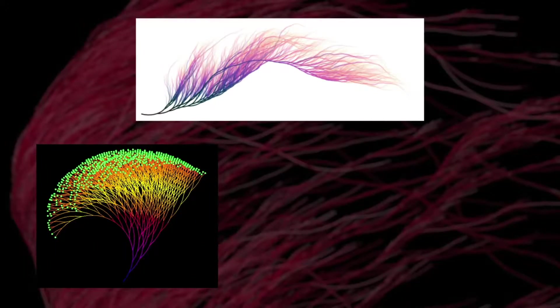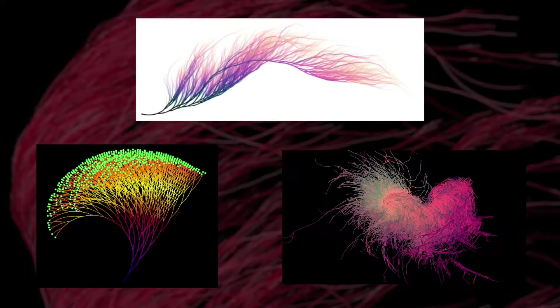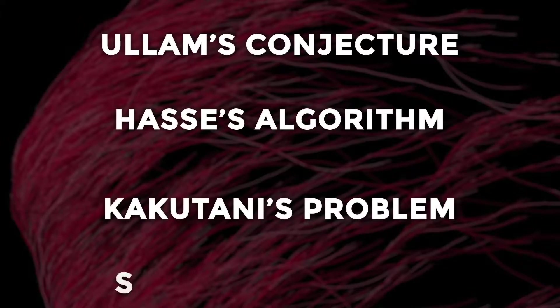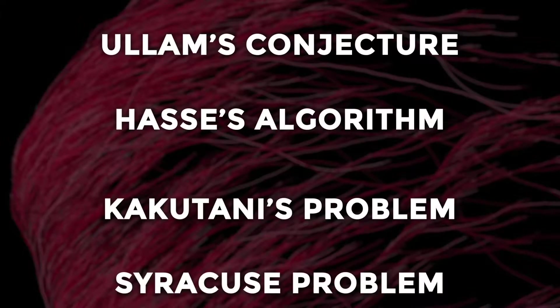This, this, and this is all a visual representation of the Collatz conjecture, which is also called Ulam's conjecture, Hasse's algorithm, Kakutani's problem, or Syracuse problem. As you can see, a lot of people have had a problem with this problem.